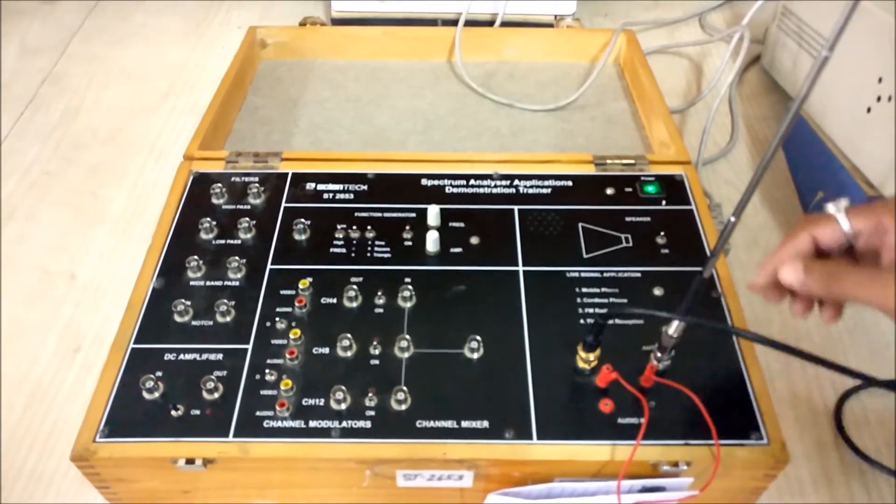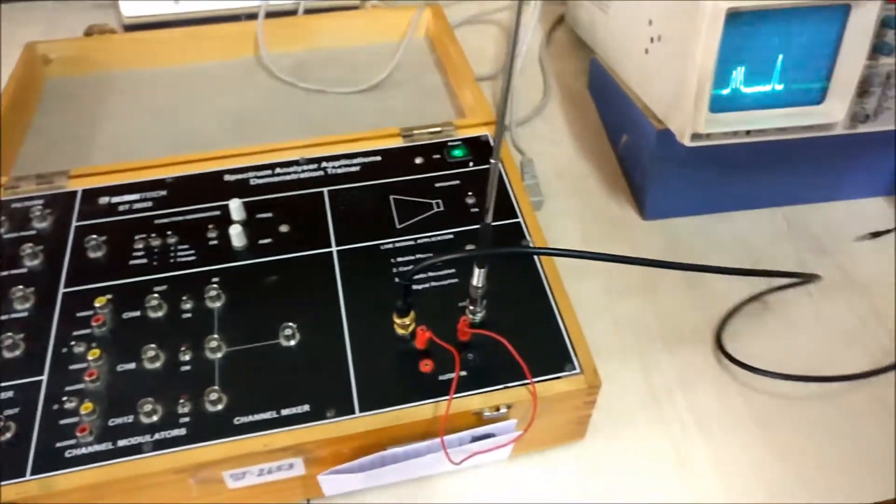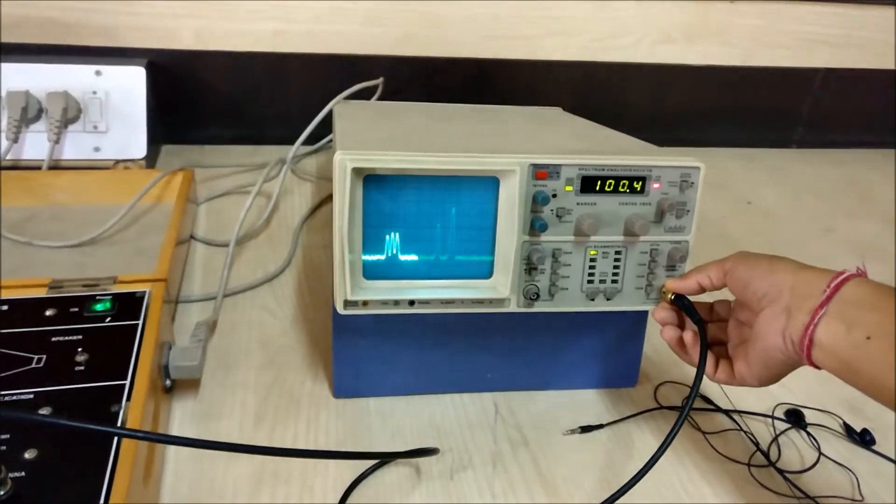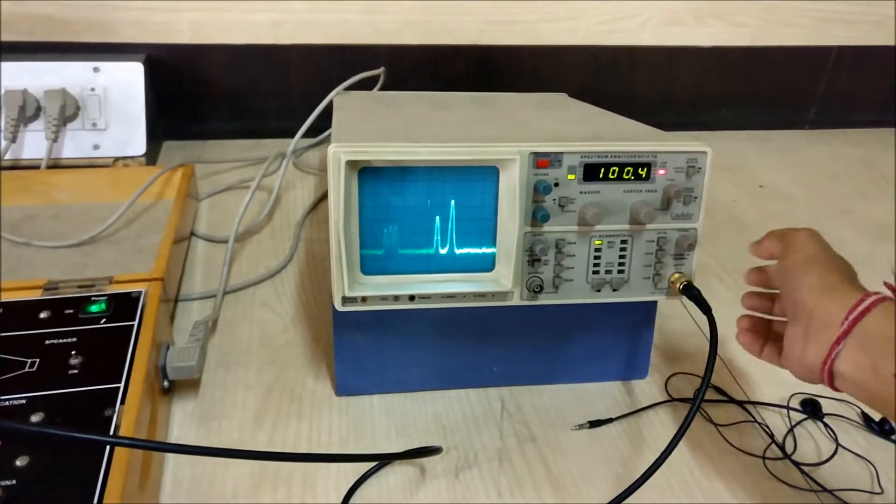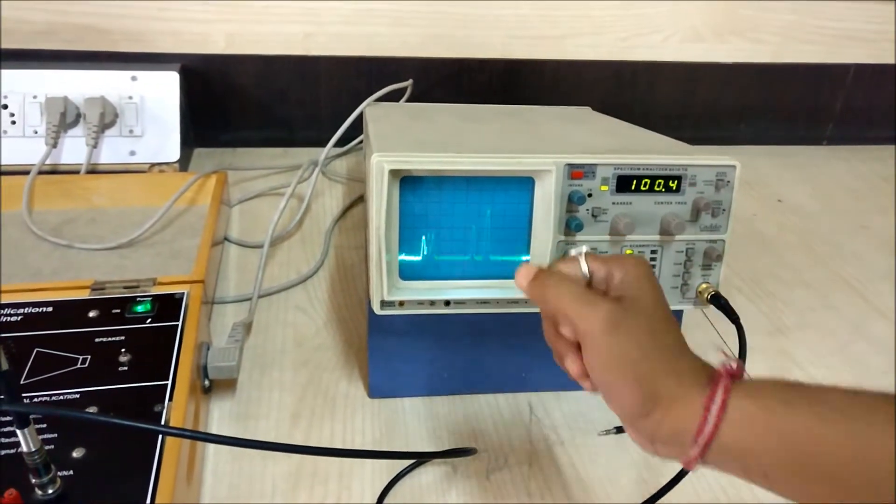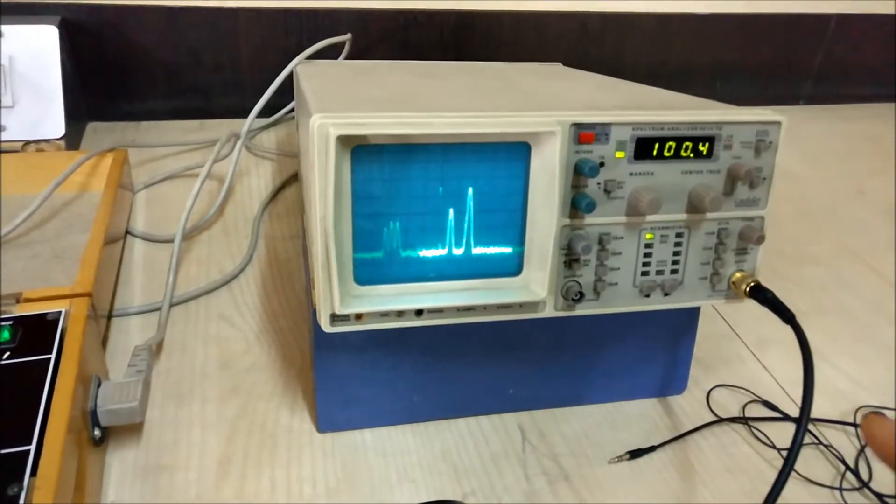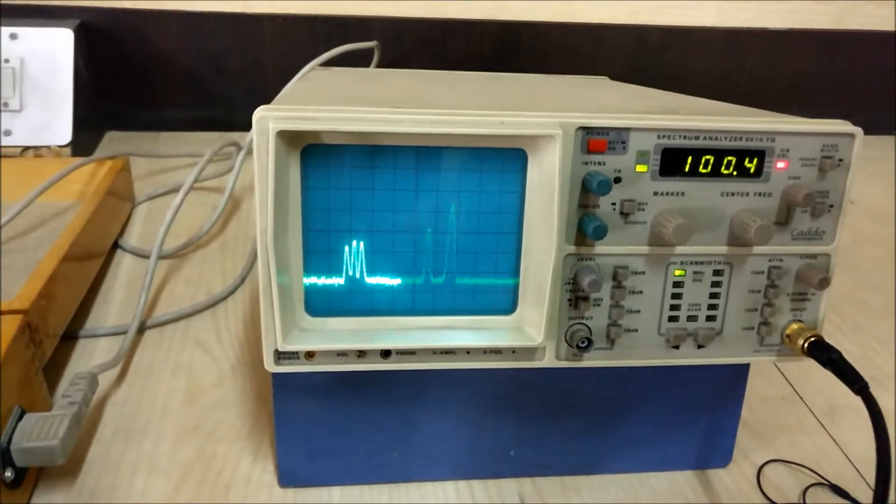Now this is a BNC probe, this is the output of this kit. We have connected this to the spectrum analyzer. Now we will see how we will detect these FM signals through this spectrum analyzer. Currently we are seeing the channels available in the spectrum range which is between 88 megahertz to 108 megahertz.